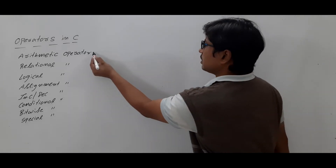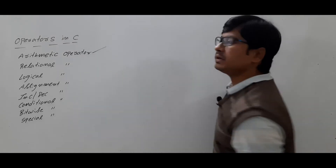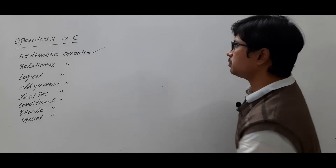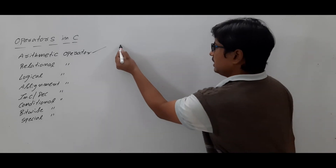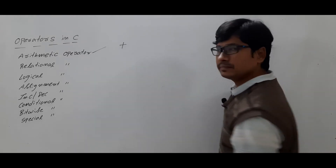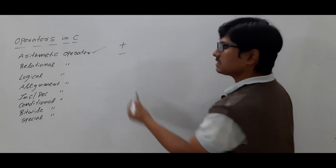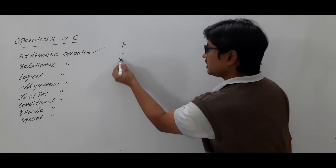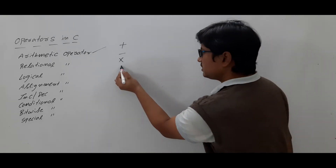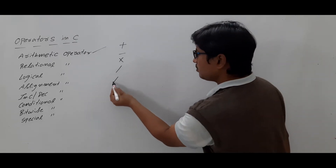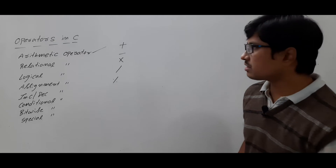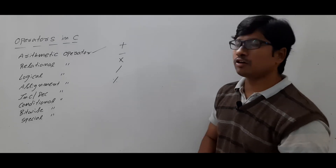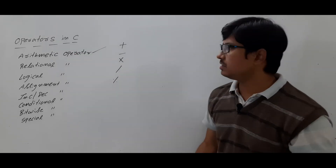First let me discuss about the arithmetic operator. This arithmetic operator supports addition, subtraction, multiplication, division, and modulus. These are the five different arithmetic operators that C language permits.